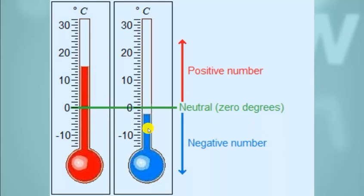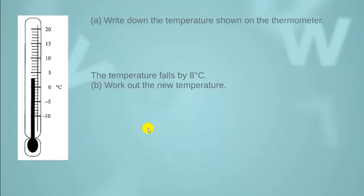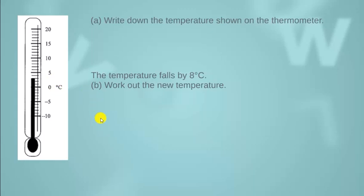I hope you have understood the concept of negative numbers. Here we have a little task which you need to solve by yourself, but I will help you as we start. The question is: write down the temperature shown on the thermometer. The bigger line is showing 0 and the short lines are showing 1, 2, 3, 4, then again a big line at 5. After every 5 lines, you get a big line showing multiples of 5. So here 1, 2, 3 — you have 3 degrees centigrade temperature. The next part: the temperature falls by 8 degrees centigrade. Work out the new temperature.